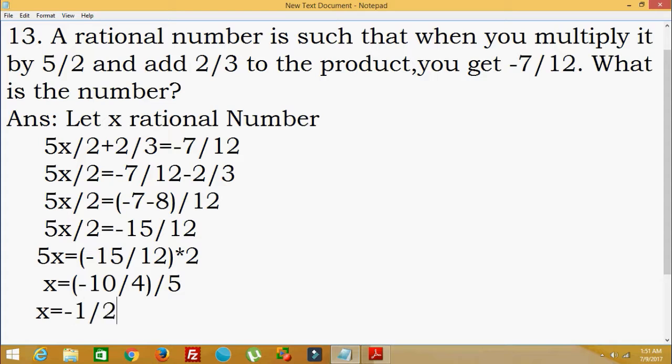The value is -1/2. This is the rational number which when you multiply by 5/2 and add 2/3, you get -7/12. This is the answer. Thank you and subscribe for more videos.